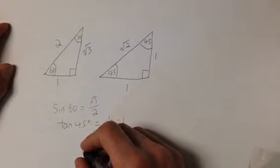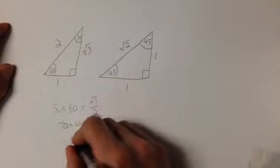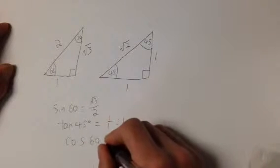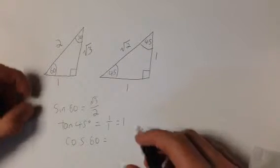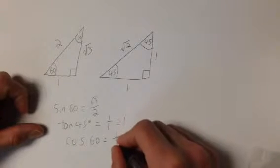One last example, the cosine of 60 degrees, which remember is adjacent over hypotenuse. The cosine of 60 degrees is 1 over 2.